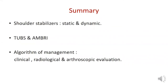To summarize: the shoulder is stabilized by static and dynamic stabilizers. There are two main types of instability — traumatic unidirectional and atraumatic multidirectional. The management algorithm depends on clinical, radiological, and arthroscopic evaluation, with the most important factor being the presence or absence of bony deficiency.